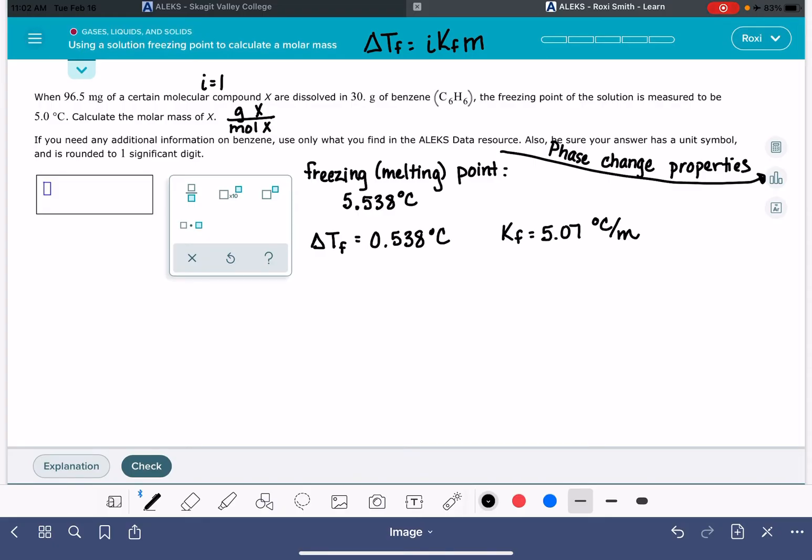Might not seem like that's going to get us where we want to be for answering this question, but we're just going to crunch the numbers and see where we're at. The molality is going to be delta Tf divided by I times Kf. Our delta Tf is 0.538 degrees C, our I value is one because it's a non-electrolyte, and our Kf is 5.07 degrees C per molality. That gives us a molality of 0.106 molality, which is 0.106 moles of this X compound divided by kilograms of benzene.